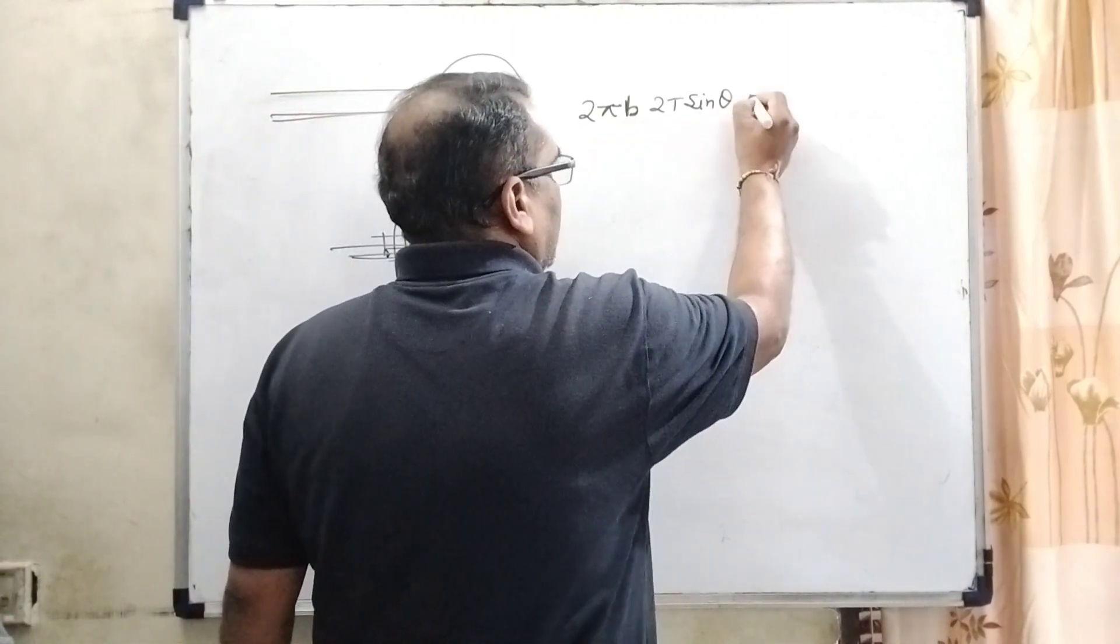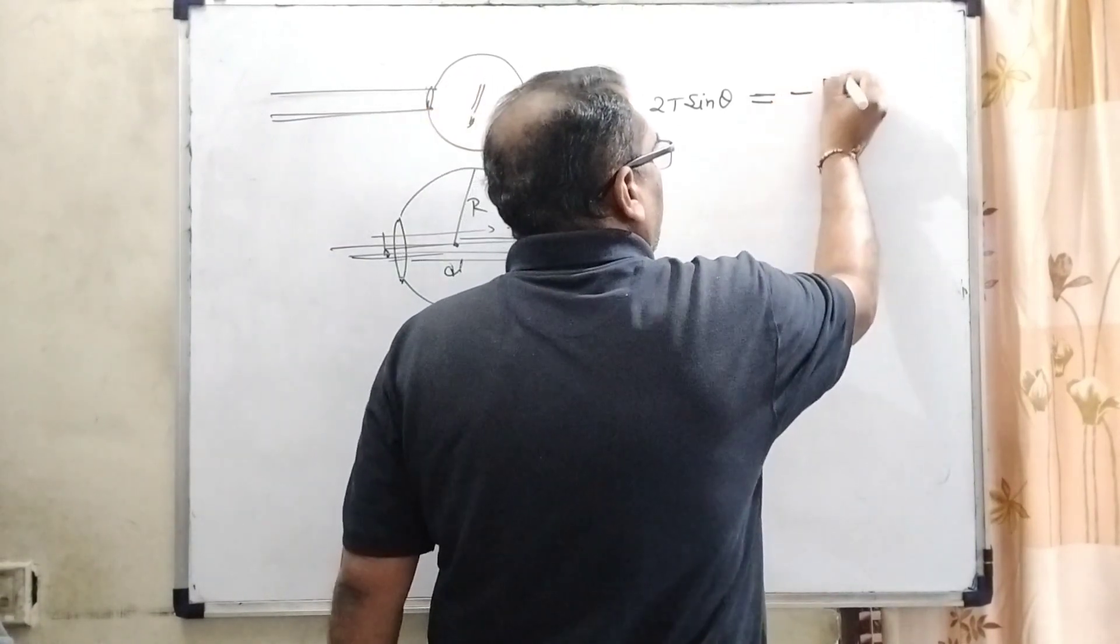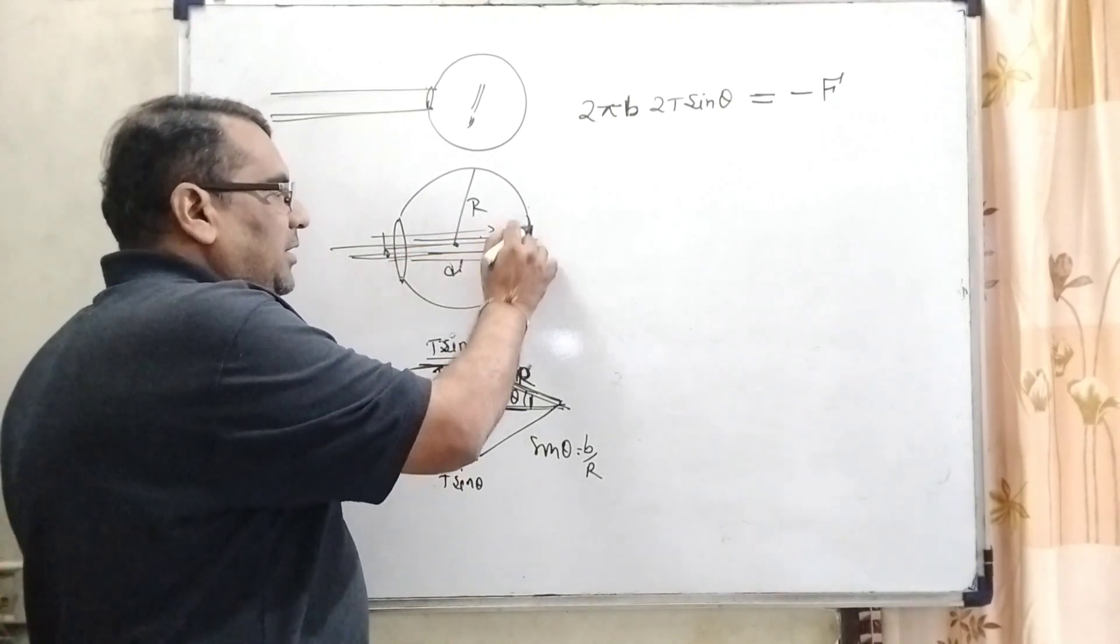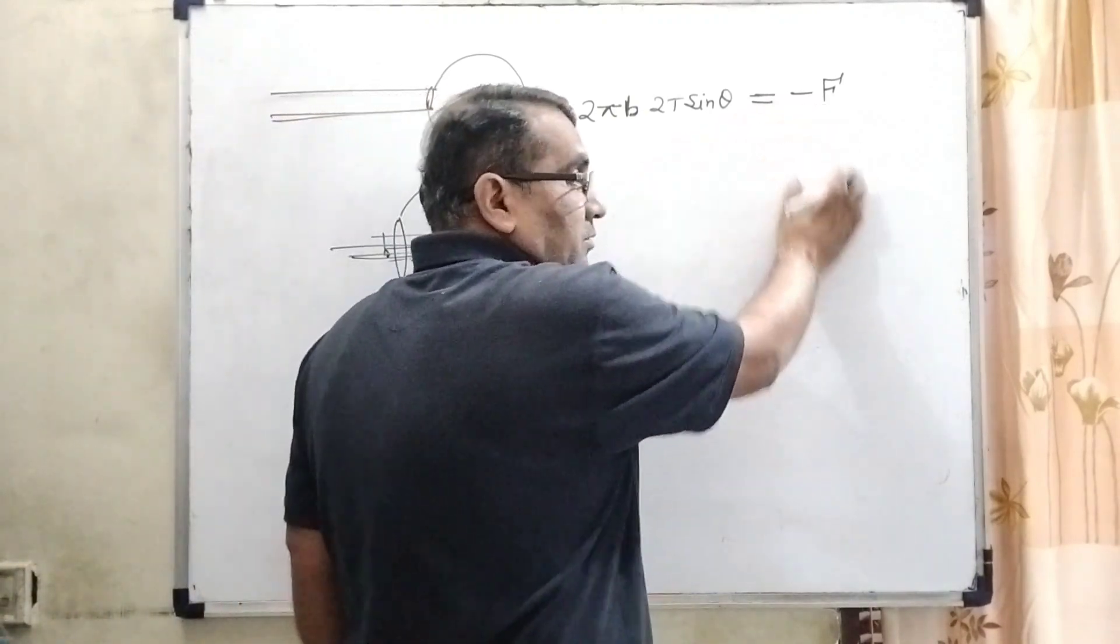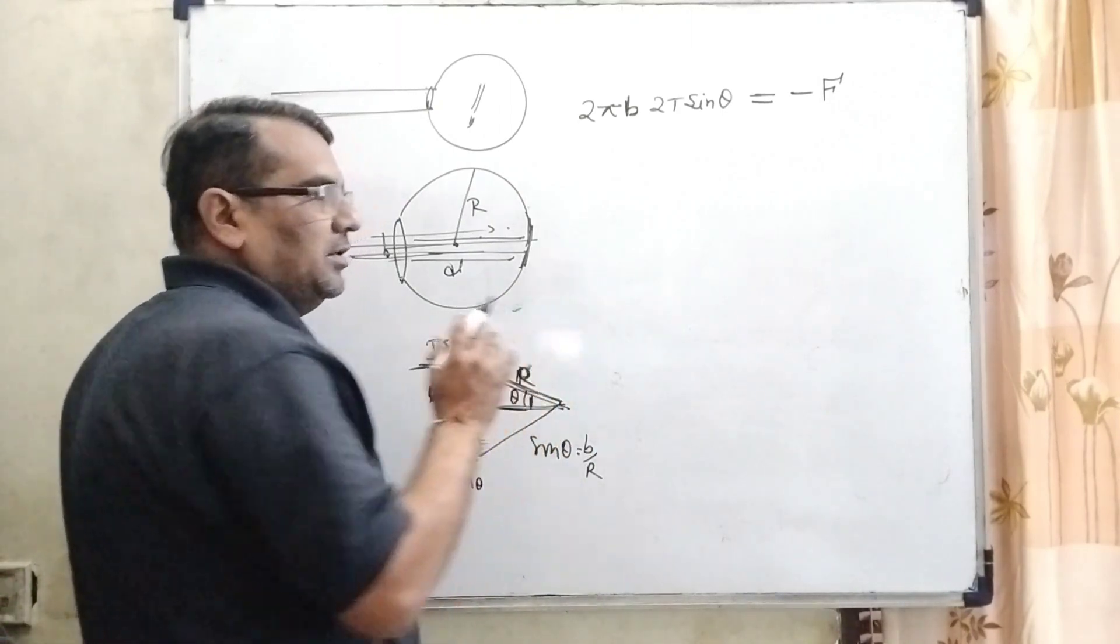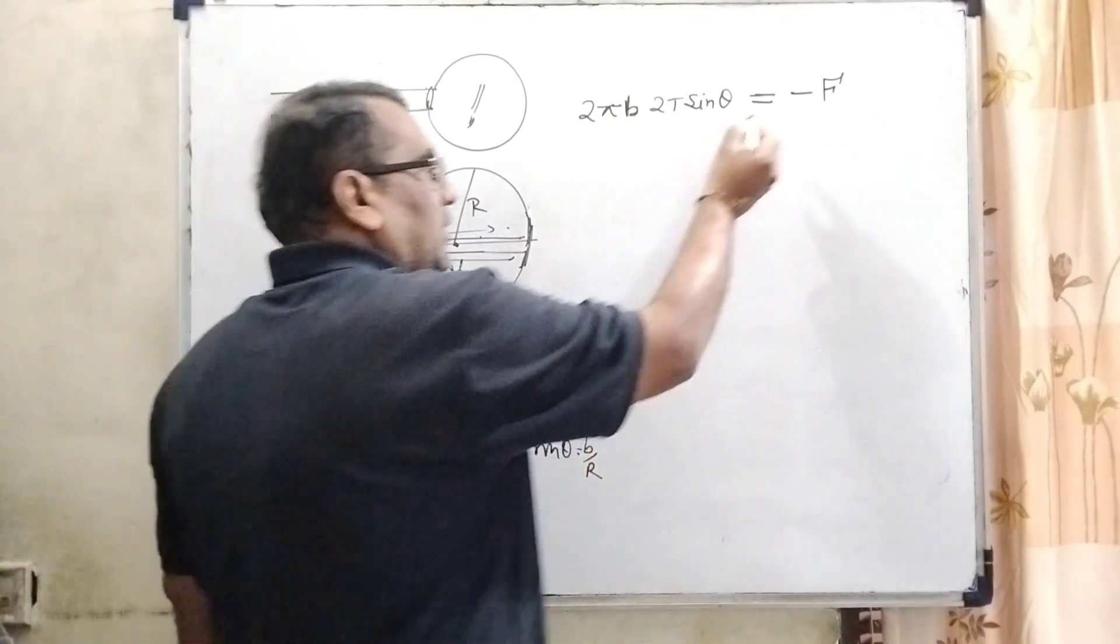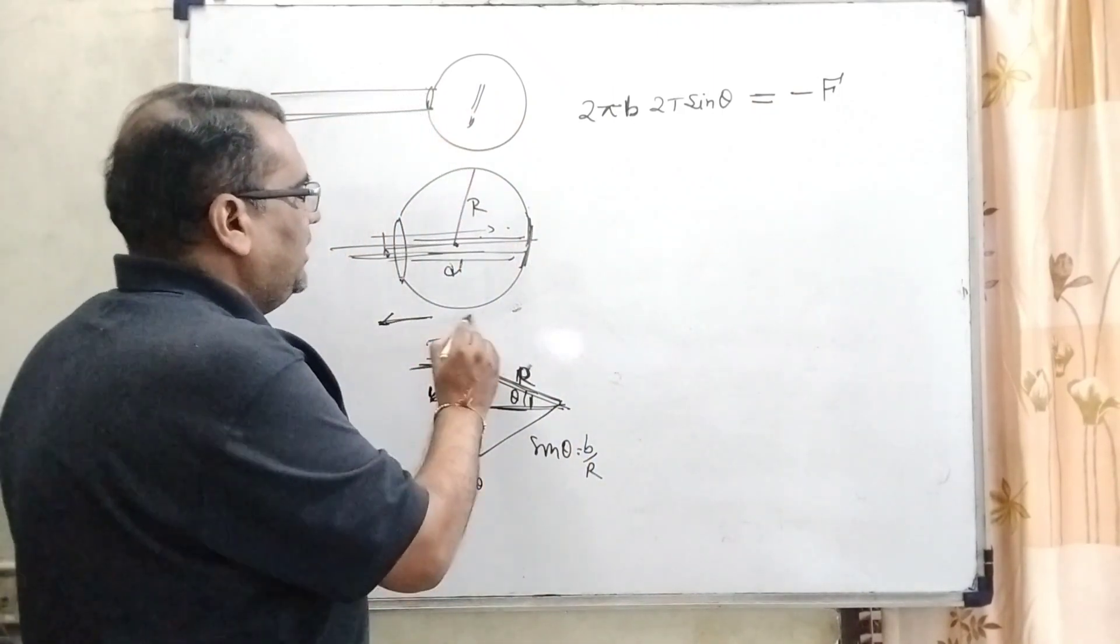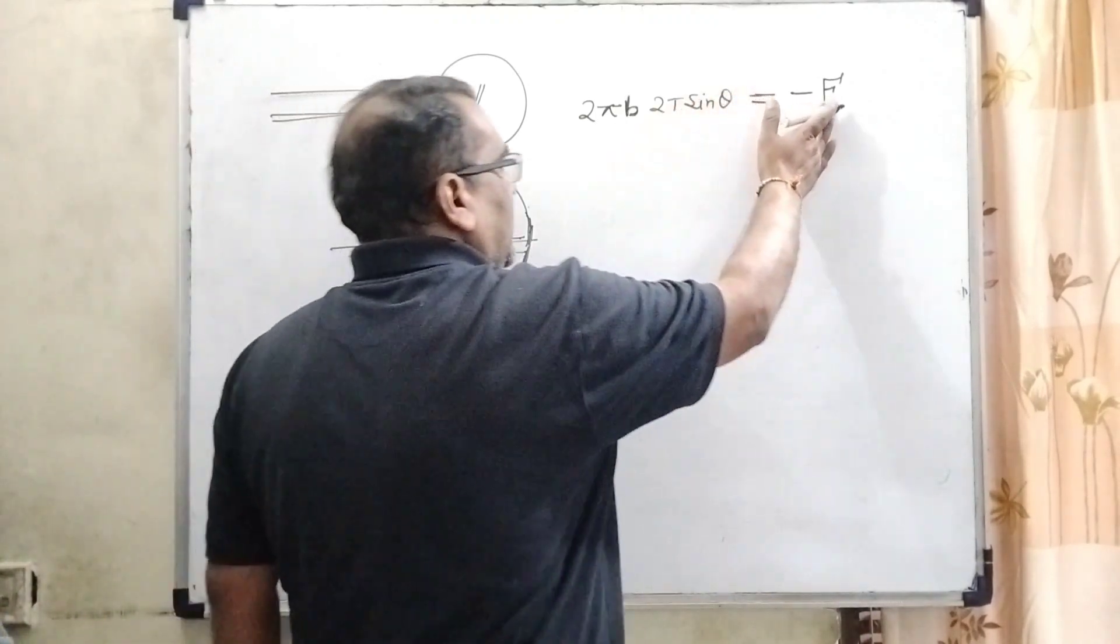So therefore we have written 2T sin θ. This surface tension is equal to the force exerted by the air which is blown inside the balloon and strikes this wall. We write it here with a minus sign. Why have we taken minus? Because when it gets separated, this force exerted by the air is greater than or equal to the surface tension. We have written minus because its direction is opposite. Surface tension is applied to the left side and the force of air is applied to the right side.